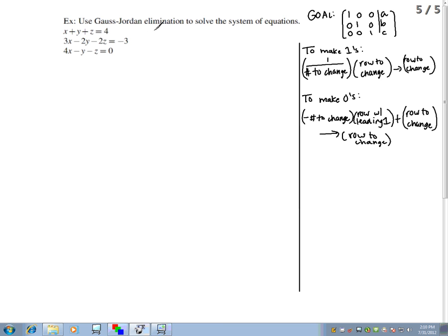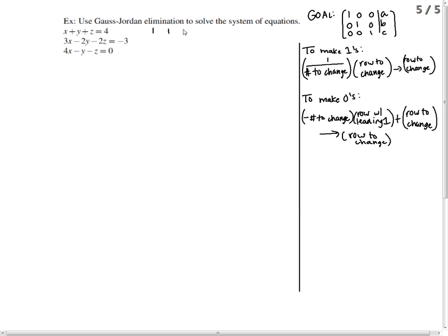So we go a row at a time. Each equation becomes a row. 1, 1, 1, 4, 3, negative 2, negative 2, negative 3, 4, negative 1, negative 1, 0.